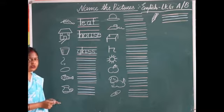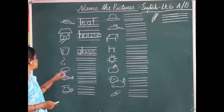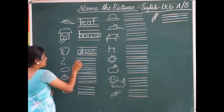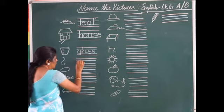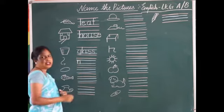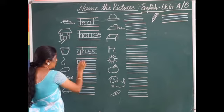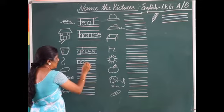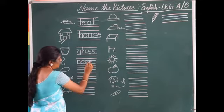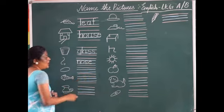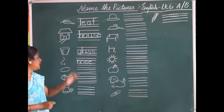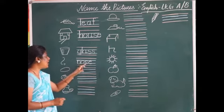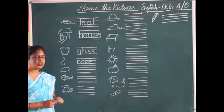Now we are going to learn how to write the spelling 'nose'. This is nose. Show me your nose. What is this? Nose. A standing line joining two curved lines makes the letter N. Round and round just like the ball, the letter O. Two curves joining together makes the letter S. A sleeping line with a curve joining the two blue lines makes the letter E. N-O-S-E, nose. You say N-O-S-E, nose.